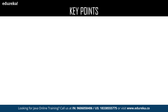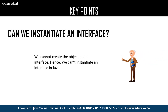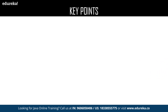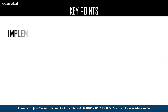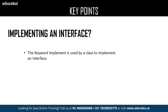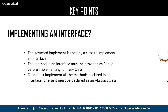Now let us discuss key points about Java interfaces. First, can we instantiate an interface? No, we cannot create an object of an interface, hence we cannot provide instances in an interface. The next key point is abstraction — the major advantage of interface is abstraction because none of the methods declared in an interface have a body. For implementing an interface, the keyword 'implement' is used in a class. The method in an interface must be declared with public access modifier. A class must implement all the methods declared in an interface, or else it must be declared as an abstract class.